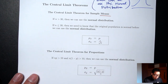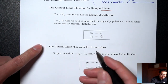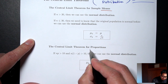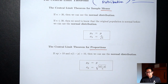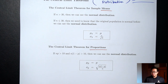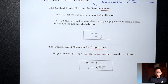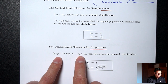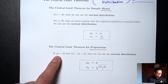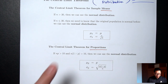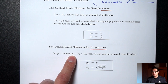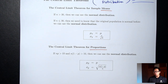For the proportion situation, when are we allowed to use the normal distribution? Same idea — if your sample size is big enough, then yes, you can use it. In the proportion situation, 'big enough' doesn't have to do with 30; it has to do with two criteria: n times p must be greater than 10, and n times (1 minus p) must be greater than 10. If both are met, you can use the normal distribution.